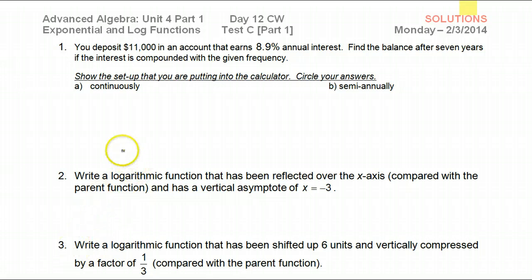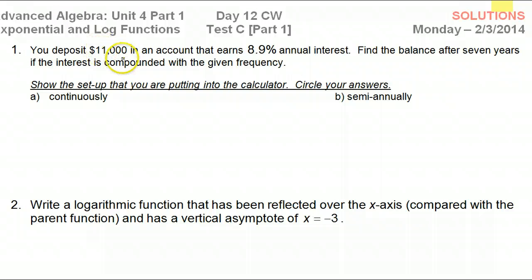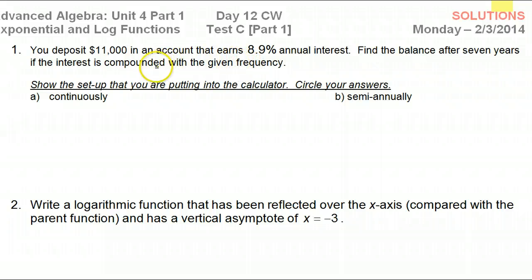Number one. You deposit $11,000 in an account that earns 8.9% annual interest. Find the balance after seven years if the interest is compounded with the given frequency. Compound interest problems — yes, it is on the test. And no, they are not going to give us the formulas. You need to know the formulas.